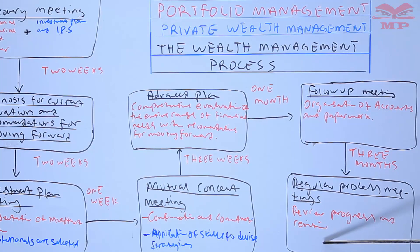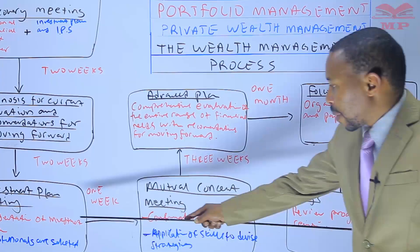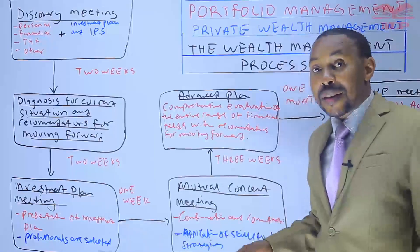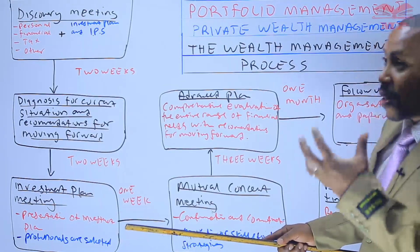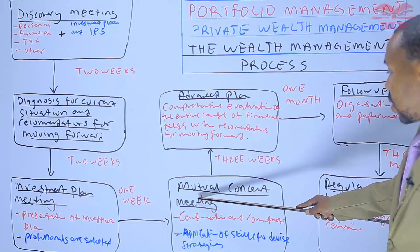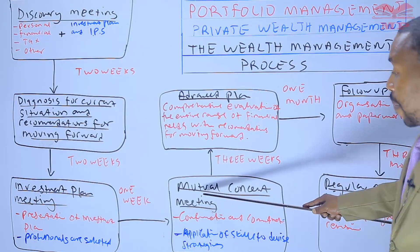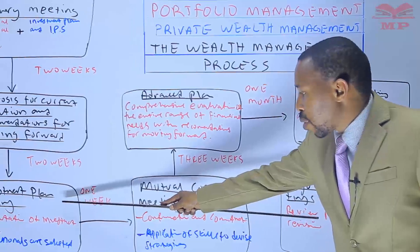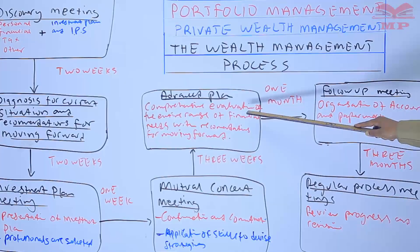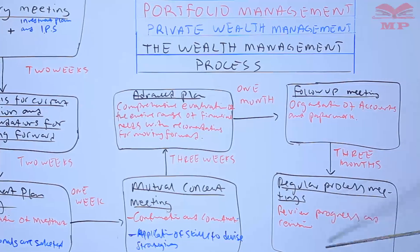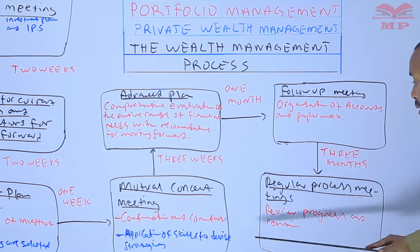If rebalancing is needed, you need to go back to the investment plan step. For example, if market movements dictate that more equities should be invested in the portfolio, you return to the investment plan, then come to the mutual consent meeting to inform the client that rebalancing is needed, then the advanced plan. Once you are in a constant review cycle, the rebalancing process can take maybe two to three days, and at most one week, instead of the original longer durations.